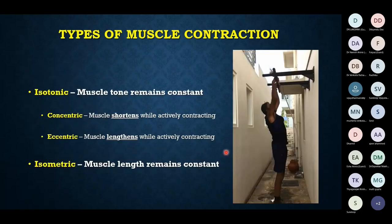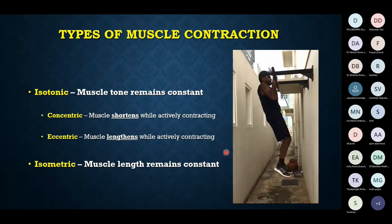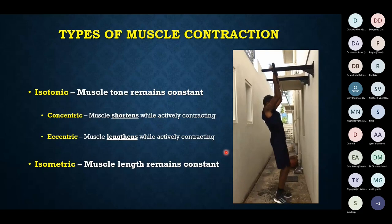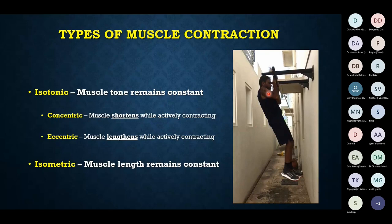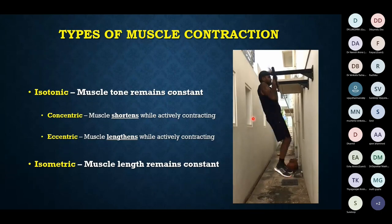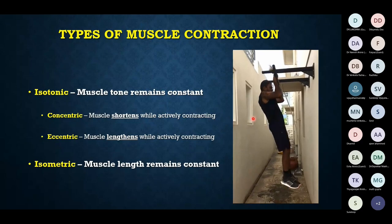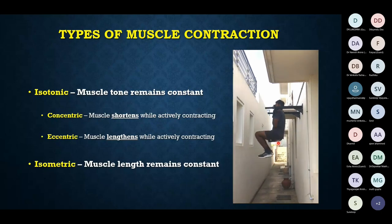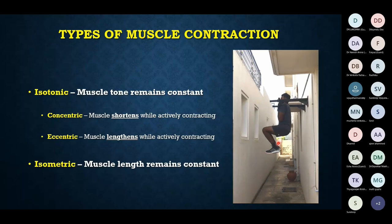There are different types of muscle contraction. An isotonic muscle contraction is where length changes but tone remains the same — it can be concentric, where the muscle shortens as it contracts, or eccentric, where the muscle is actively contracting but actually lengthening. Isometric contraction is where the muscle stays contracted but tone increases over time.